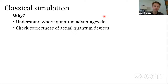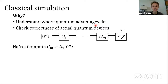A typical simulation task would be: you have some quantum circuit with maybe m gates, and you'd like to sample from the output distribution — so it's like simulating a measurement. Of course, you can always do this in a naive way with matrix-vector multiplication, but we're interested in cases where we can do better than this brute force approach.